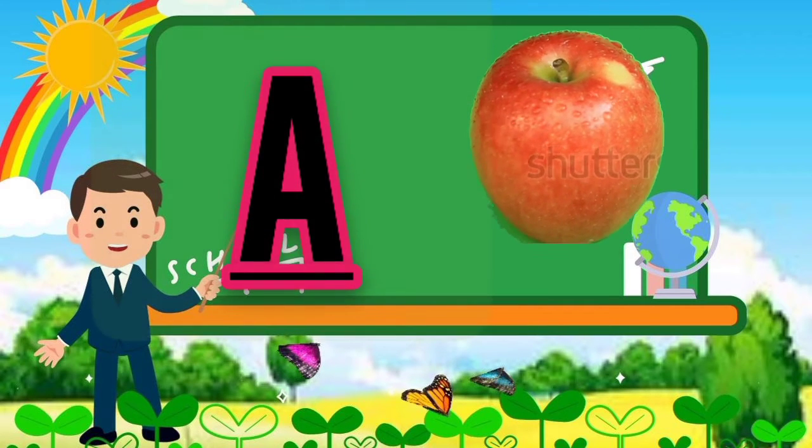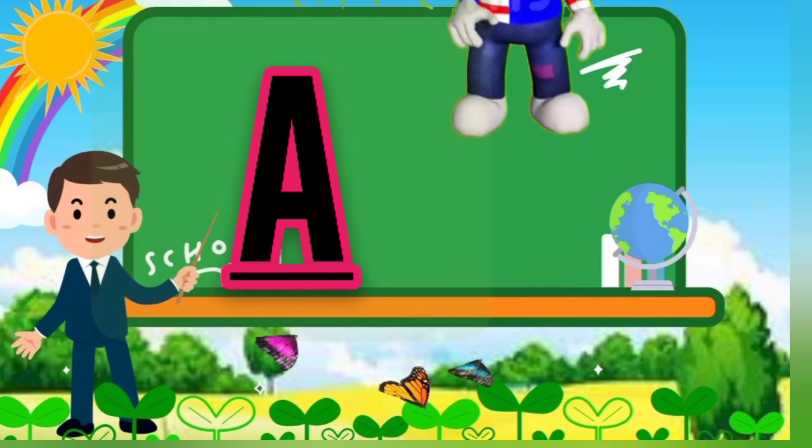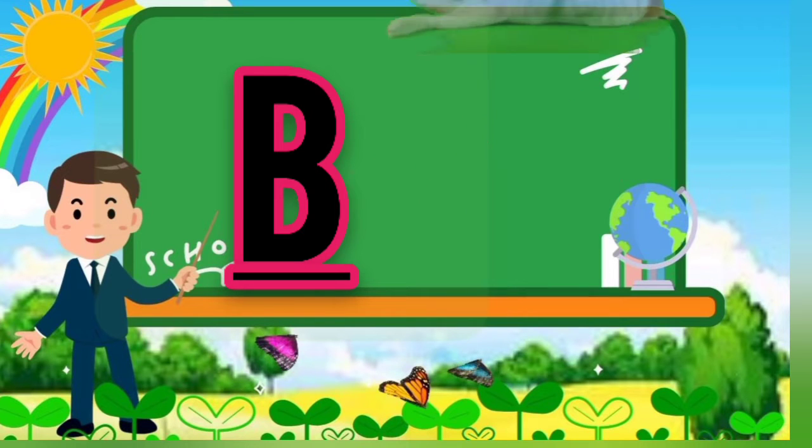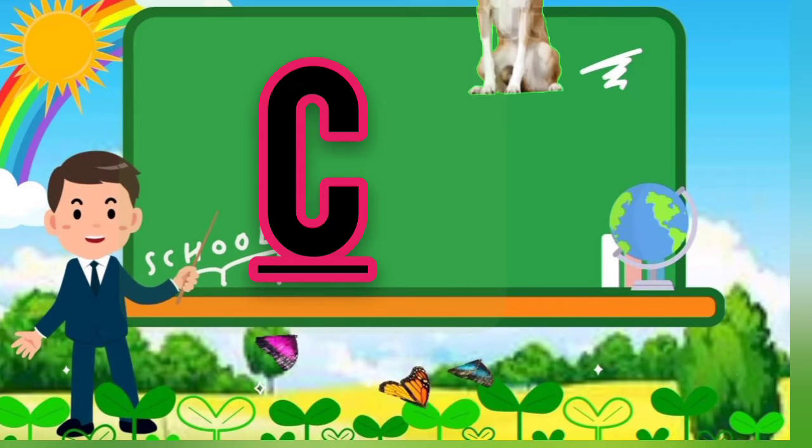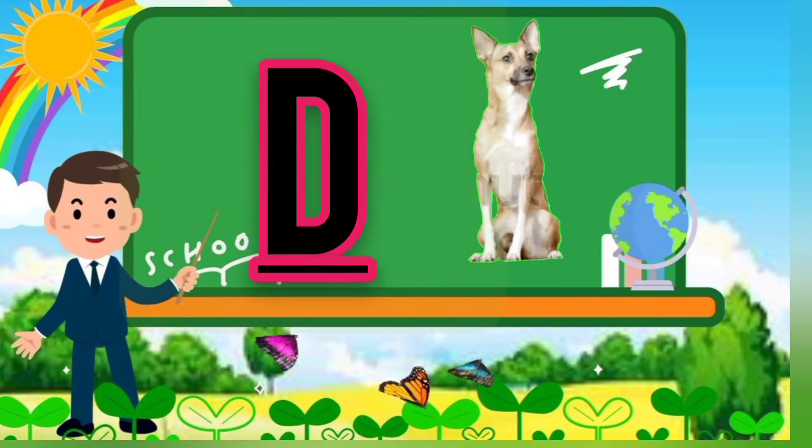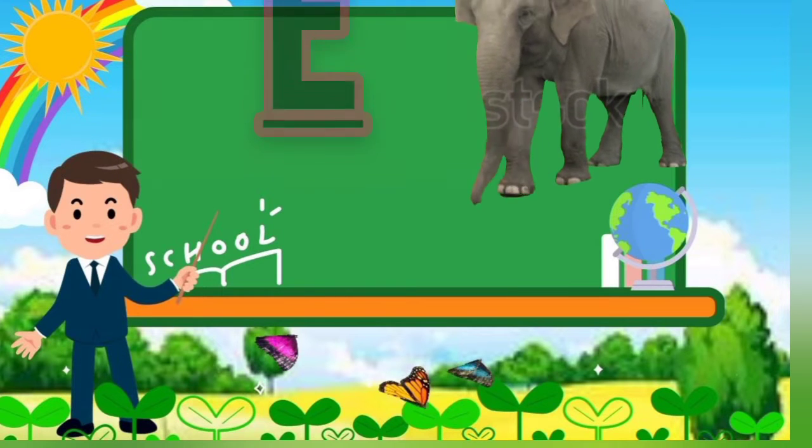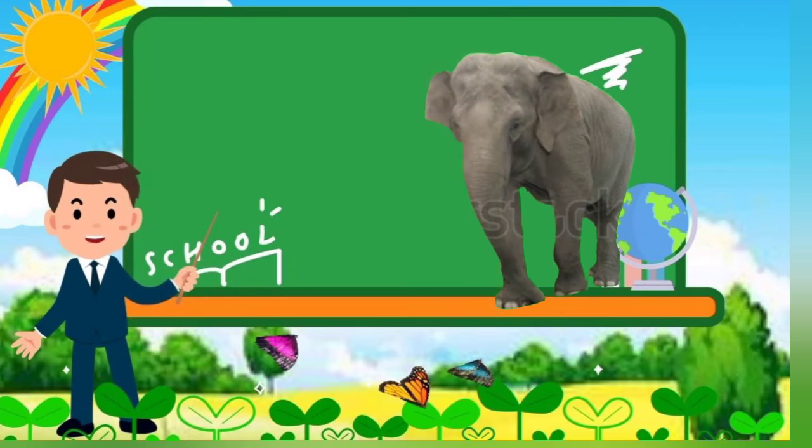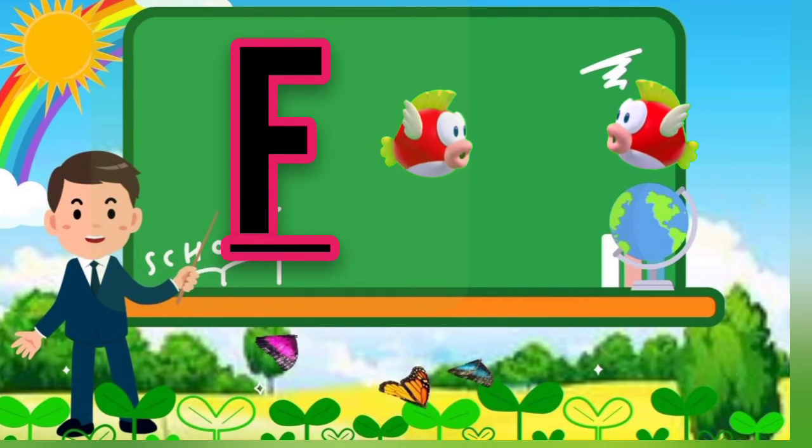A for apple, B for boy, C for cat, D, D for dog, E, E for elephant, F, F for fish.